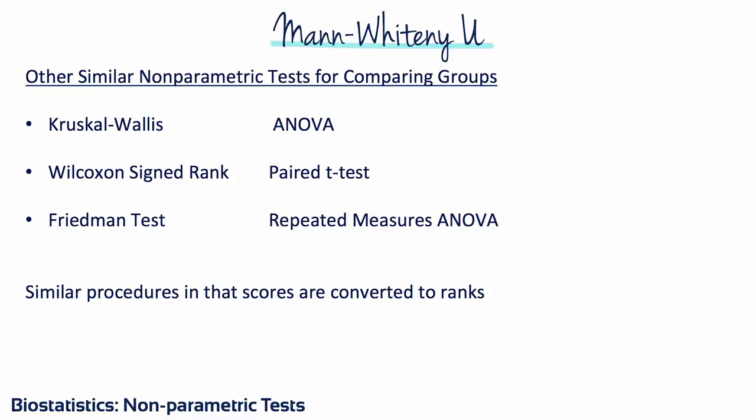The Mann-Whitney U test is a nonparametric analog to the independent samples t-test. There are other nonparametric tests that correspond with parametric tests for comparing means. When the assumptions for ANOVA for comparing three or more groups do not hold, one can use the nonparametric Kruskal-Wallis test. In place of the paired t-test for dependent samples, the nonparametric Wilcoxon Signed-Rank test can be used. When the assumptions for repeated measures ANOVA are not valid, the nonparametric Friedman test can be used. For all these tests, original scores are converted to ranks, ranks are compared between groups, and the test statistic approximates a z or chi-square distribution to obtain a p-value.